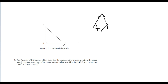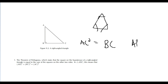This theorem is basically saying: take the longest side and square it — that number equals the sum of the squares of the other two sides, in this case BC and AB. You take those two sides, square them individually, add them together, and those remaining values are equal to each other.